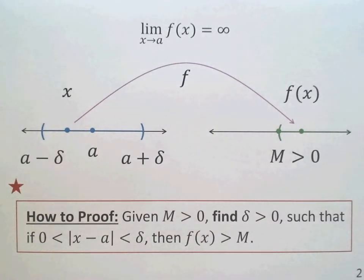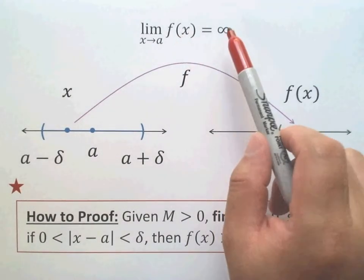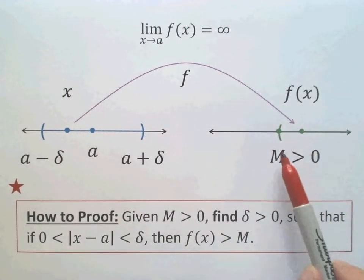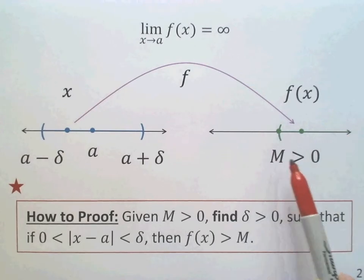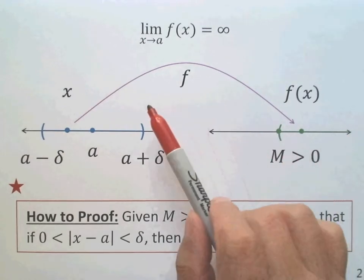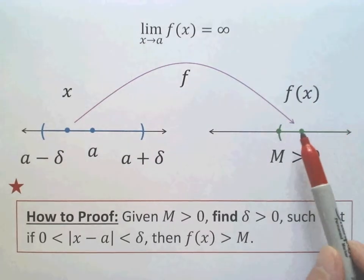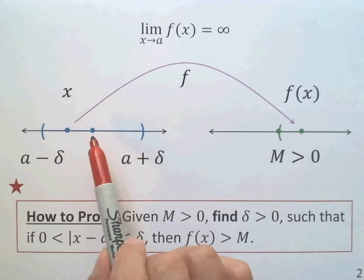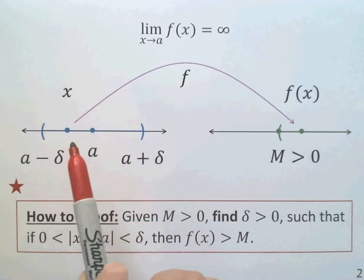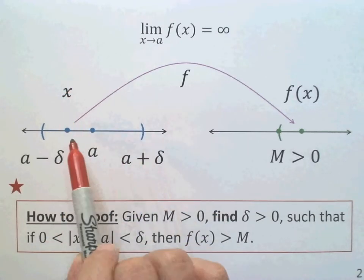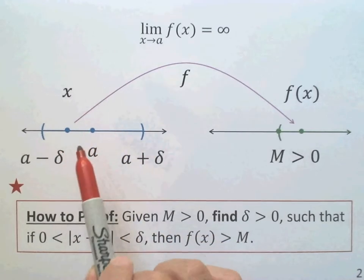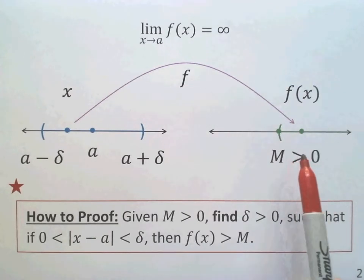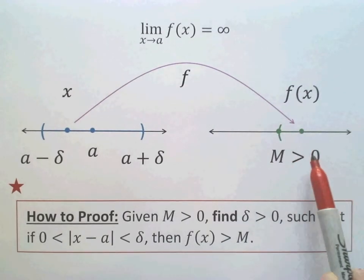The limit is positive infinity, which means for any arbitrarily large number M, we can always find and make F greater than M. How? By taking x sufficiently close to A. When x goes into the delta neighborhood of A, the value of F becomes arbitrarily large — greater than any positive number M.